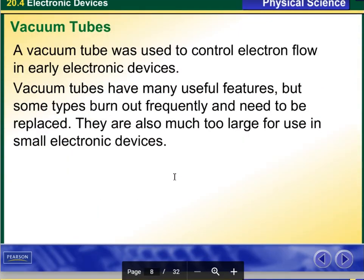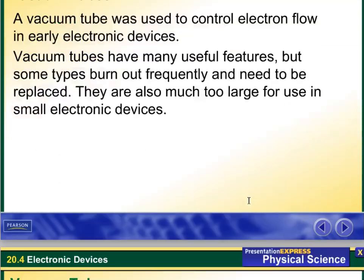Vacuum tubes were used to control electron flow in early electronic devices. Vacuum tubes have many useful features but sometimes burn out frequently and need to be replaced. They are also much too large for use in small electronic devices.